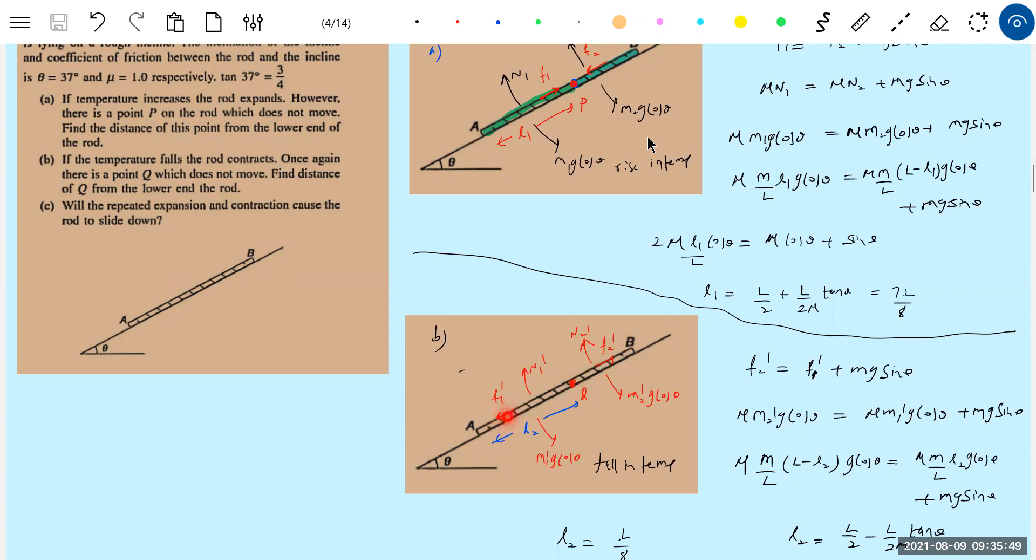The point Q is nearer, no? Here. This part will move up. This part will move down. The net, you can see that one. The 7L by 8 is what moving down. Simple geometry. The Q is here. The segment which is having longer length, it is having more displacement.